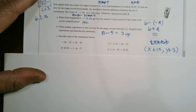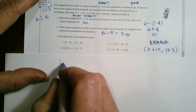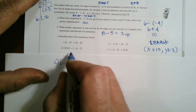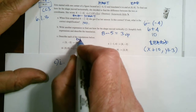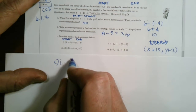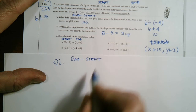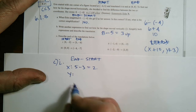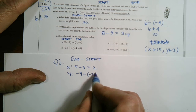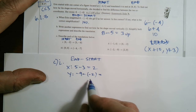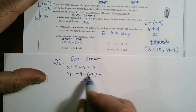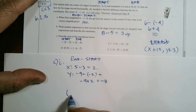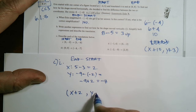Let's look at part C and do each of these the same way. For sub-problem i, I'm going from X equals three to five. To find the X, we take end minus start: five minus three equals two. Then for Y, we go negative nine minus negative two, which becomes negative nine plus two — add the opposite — which is equal to negative seven. So I can describe sub-problem i as X plus two, comma Y minus seven.